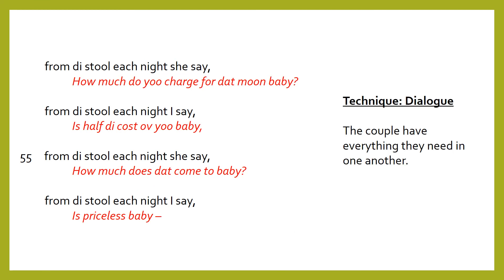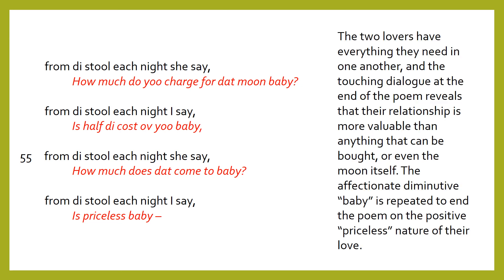The poem ends with dialogue. The couple have everything they need in one another. The two lovers have everything they need in one another, and the touching dialogue at the end of the poem reveals that their relationship is more valuable than anything that can be bought, or even the moon itself. The affectionate diminutive 'baby' is repeated to end the poem on the positive, priceless nature of their love.